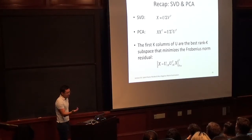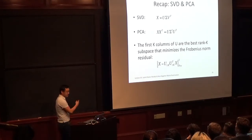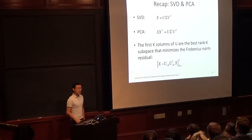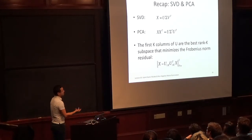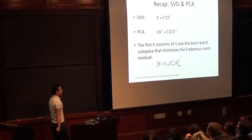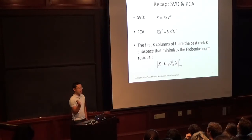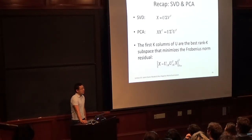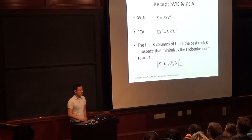To recap the story so far: SVD and PCA are strongly equivalent. Their main use case is to take the first K columns of the U matrix and use that to define a low-rank subspace onto which we project the data. This low-rank projection is useful for many downstream tasks — the theme of unsupervised learning is finding low-dimensional summaries of data useful for some downstream task.